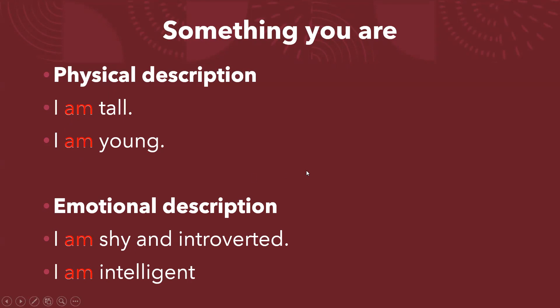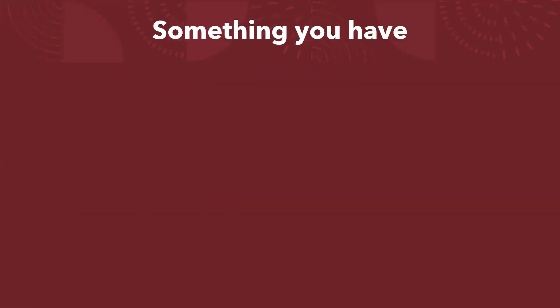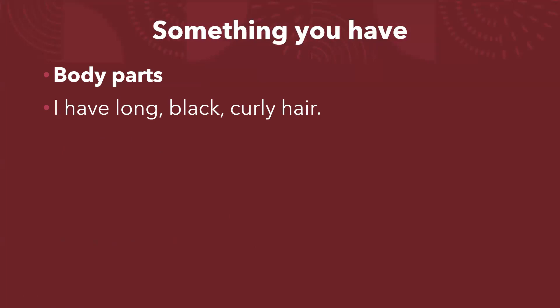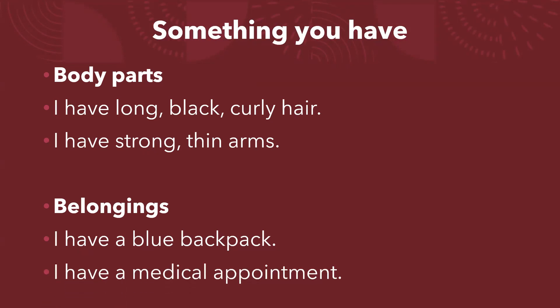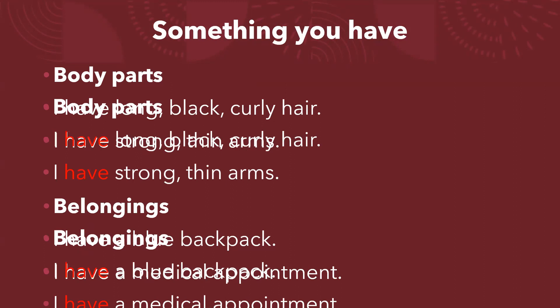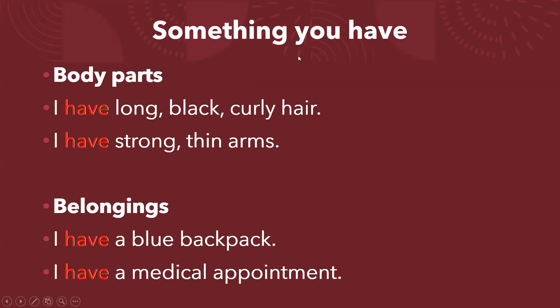And then we are going to talk about something you have. For example, body parts: I have long black curly hair, I have strong thin arms. And belongings: I have a blue backpack, I have a medical appointment. For something you have, we are using the verb have.